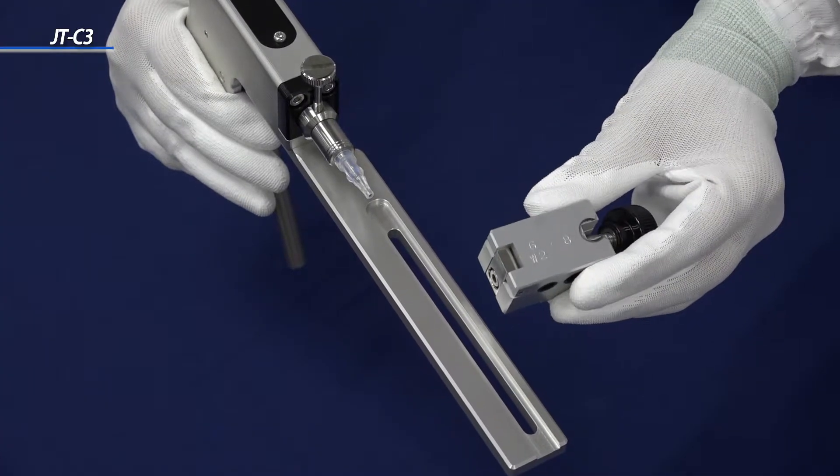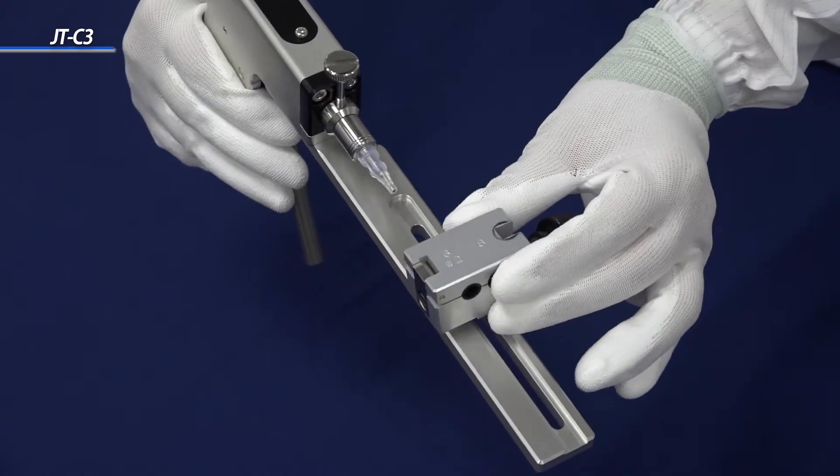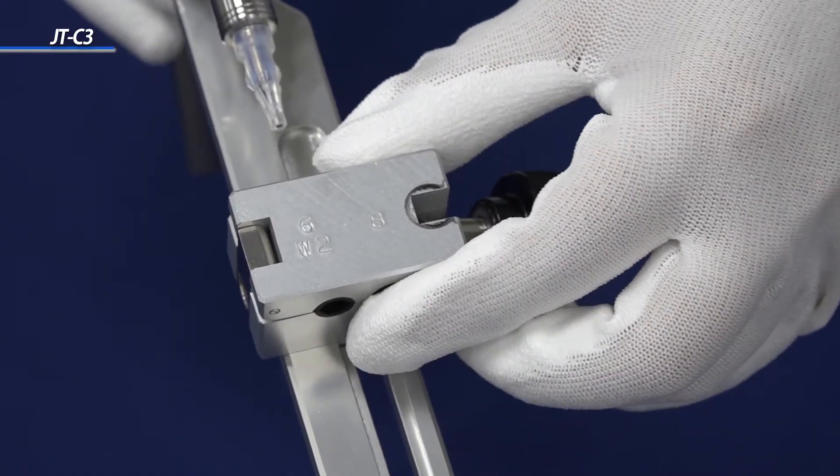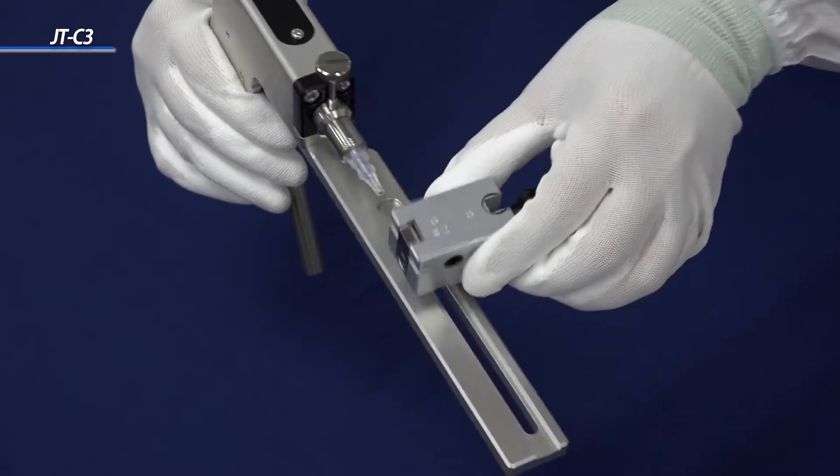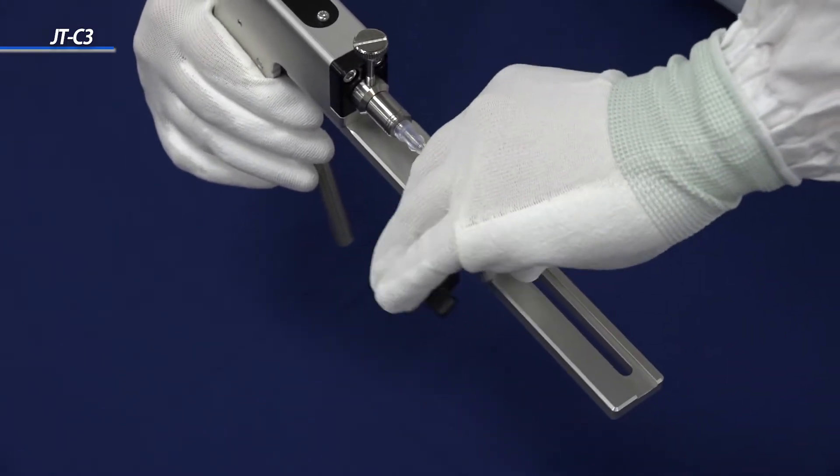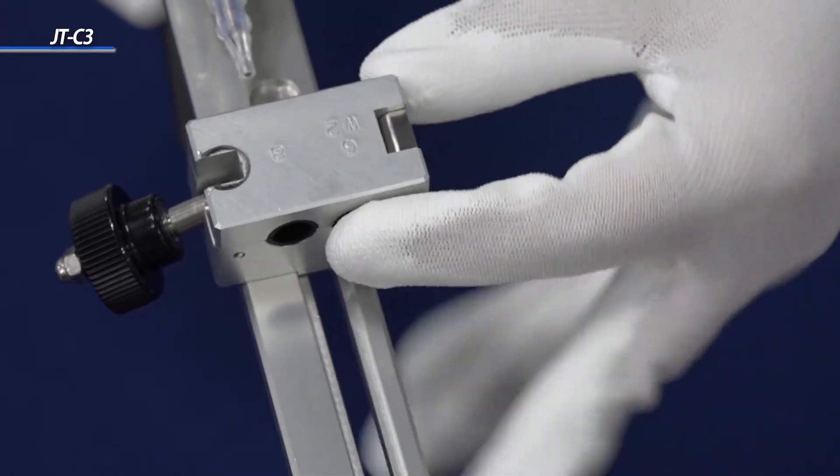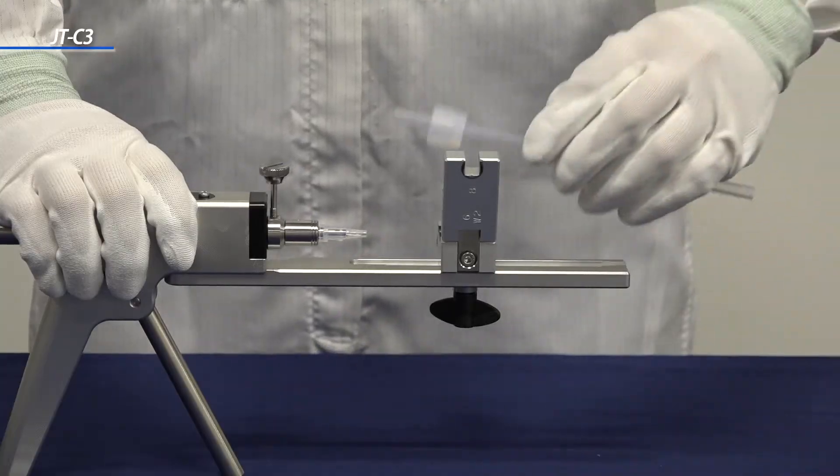Here, the number 6 is marked on the tube holder. This is where the tube holder is set to use a 6 mm wide tube. For an 8 mm wide tube, flip the holder over and locate the number 8. This is where the tube holder is set to insert the fitting into an 8 mm wide tube.